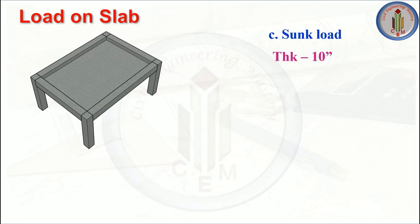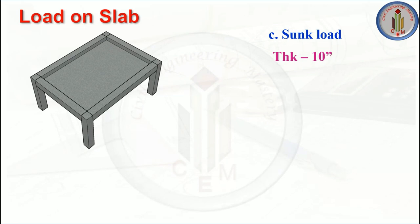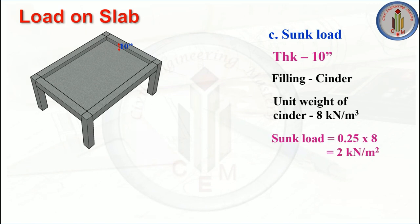Next is sunk load. This applies wherever we have porticos, toilets, or utility areas — these have a sunk slab, meaning the slab is not at the same level as other slabs. Here the slab is 10 inches below the top level, which is called a sunk slab. This area is filled with filling material to accommodate pipe connections for bathrooms and utility areas.